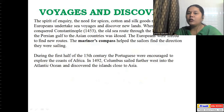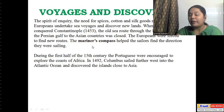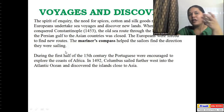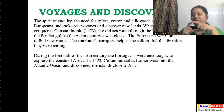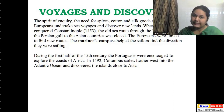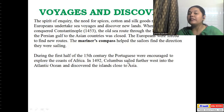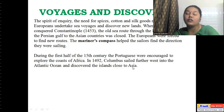When the Turks conquered Constantinople, the old sea routes to the Red Sea and the Persian Gulf to the Asian countries were closed, so the Europeans had to find new routes. The mariner's compass helped sailors find the direction they were sailing — it is circular in shape and tells you the four directions: north, east, west, and south. During the first half of the 15th century, the Portuguese were encouraged to explore the coast of Africa. In 1492, Columbus sailed further west into the Atlantic Ocean and discovered islands close to Asia.